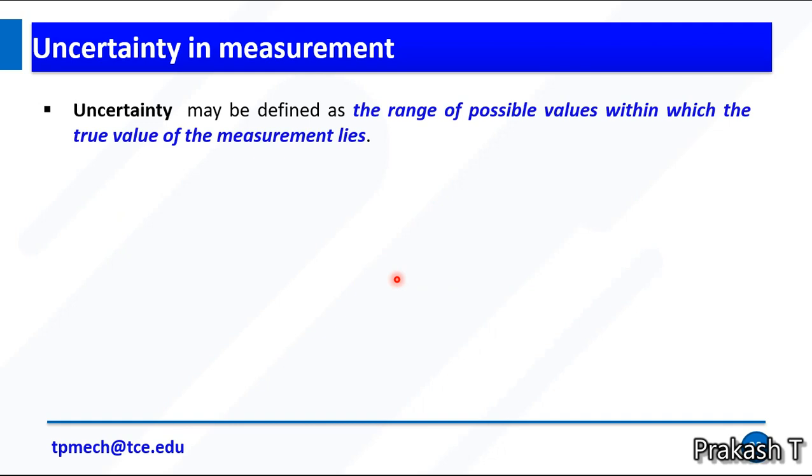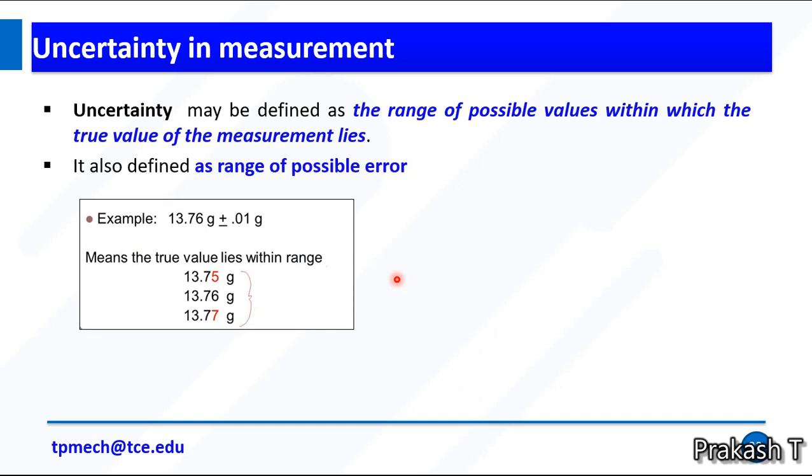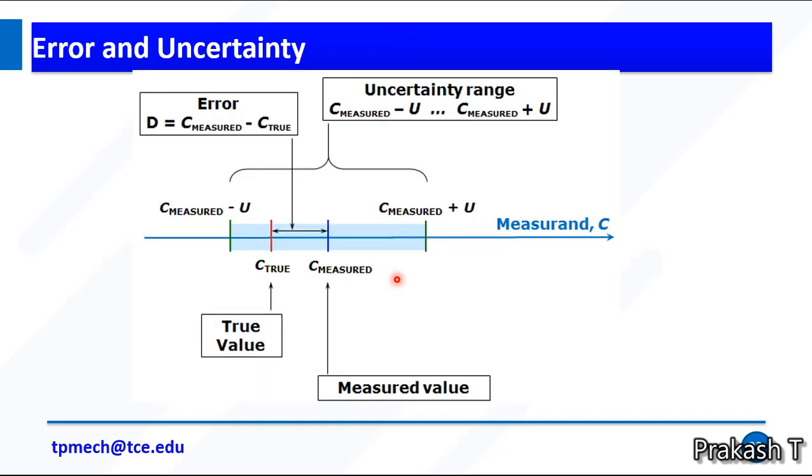Uncertainty: it may be defined as the range of possible values within which the true value of measurement lies. It is also defined as the range of possible errors. For example, if 13.76 is an accurate value, I am giving the range plus or minus 0.1. Then the true value may lie within the range of 13.75, 13.76, or 13.77.